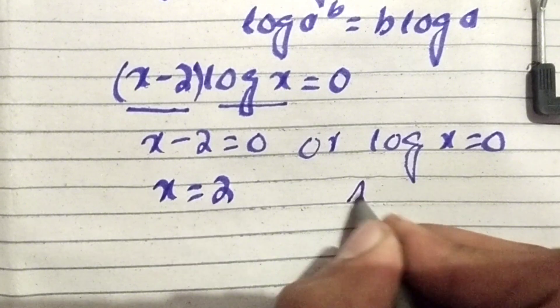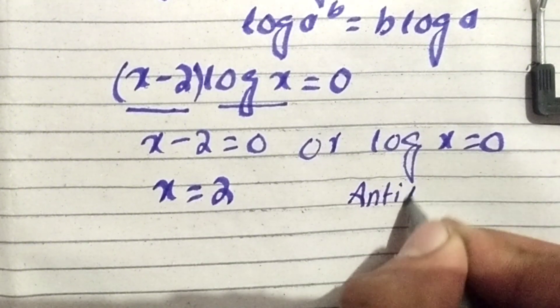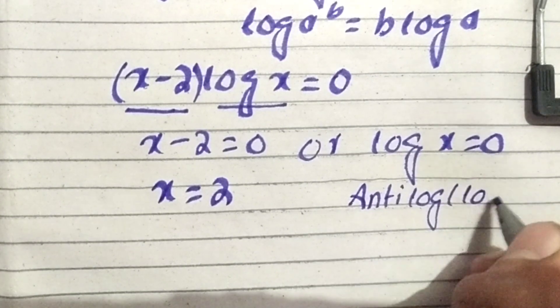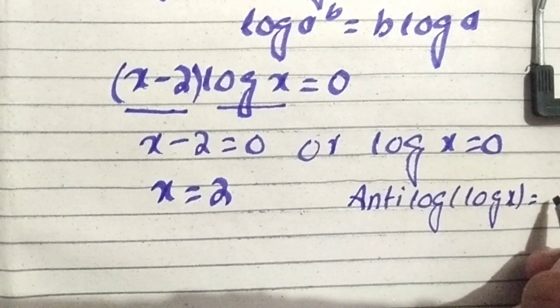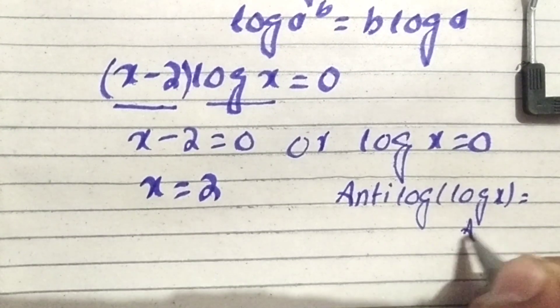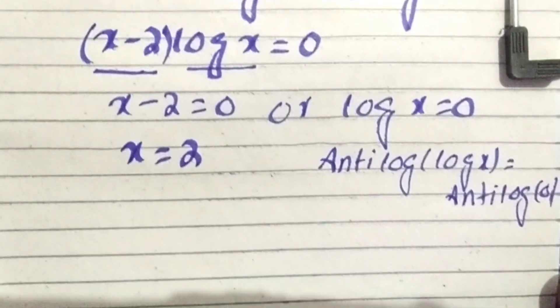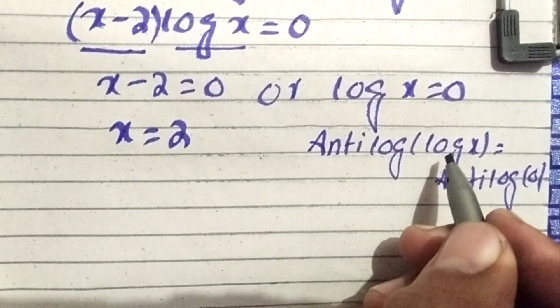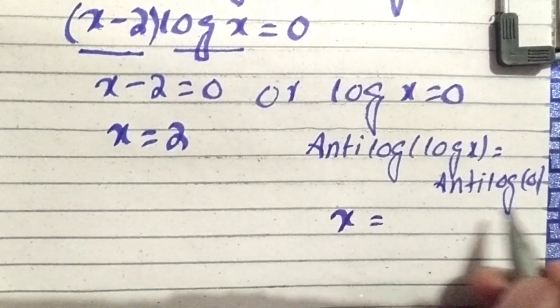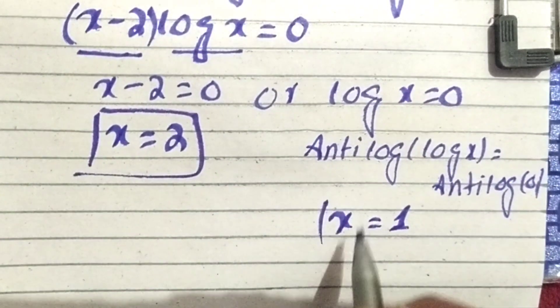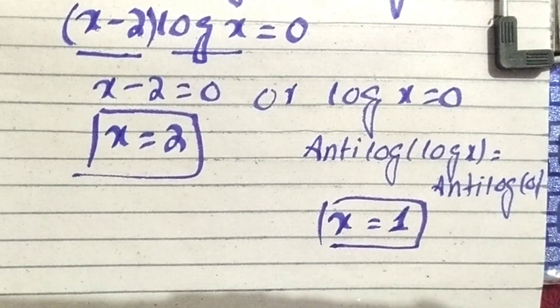And taking anti-log on both sides where log of x is equal to 0, anti-log of log of x is equal to x, and anti-log of 0 is equal to 1. So x is equal to 2 and x is equal to 1 are the two possible solutions.